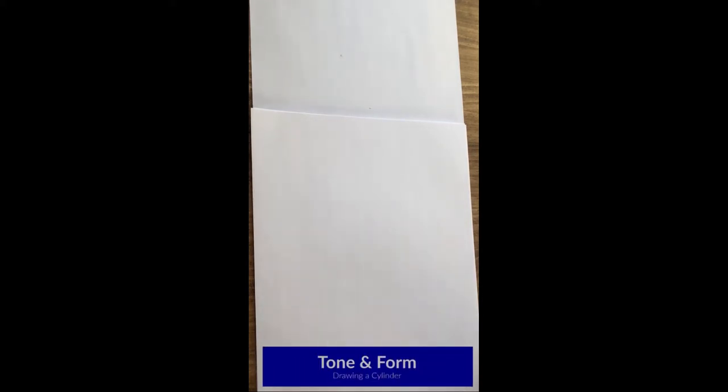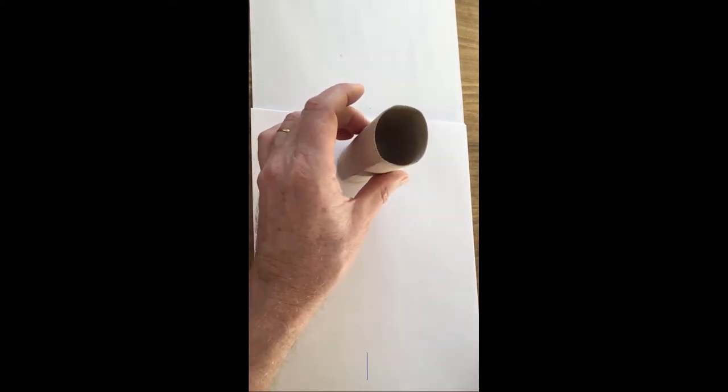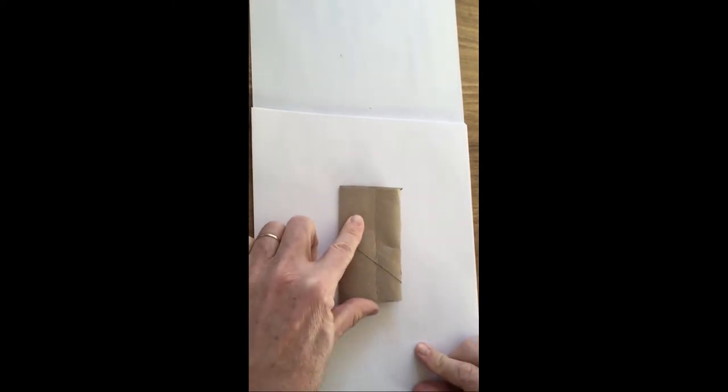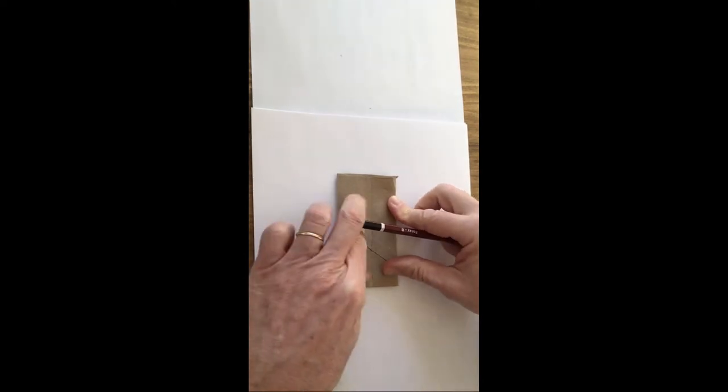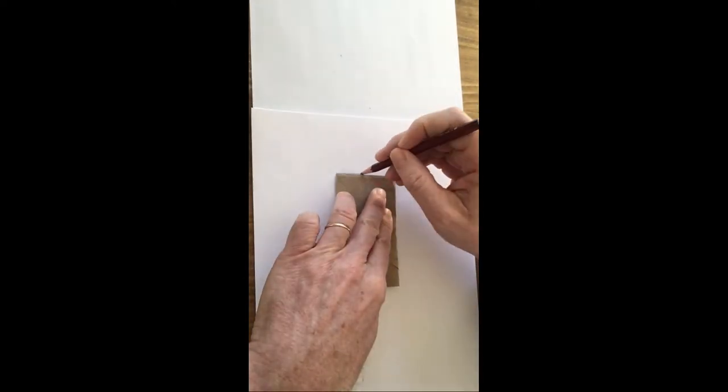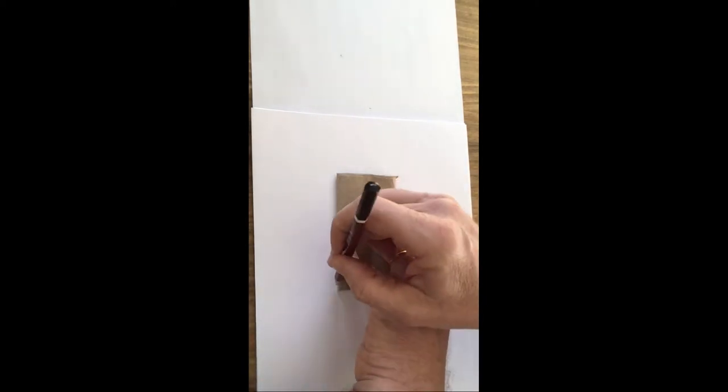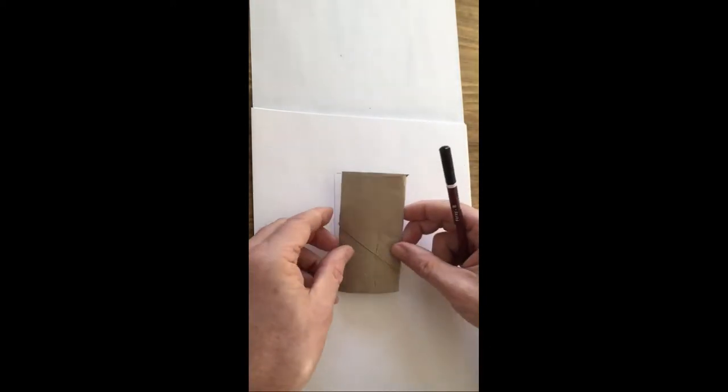Now the next part, I'm going to get a toilet roll holder and flatten it. I'm going to put it on my page and draw around it lightly to give myself my rectangle.